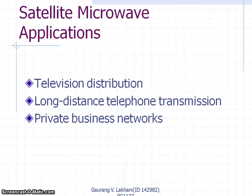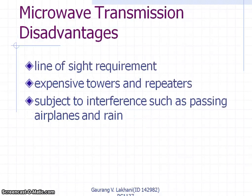Satellite microwave applications include television broadcasting, long-distance telephone transmission, and private business networks. Microwave transmission disadvantages include line-of-sight requirements, expensive towers and repeaters, and susceptibility to interference from passing airplanes and trains.